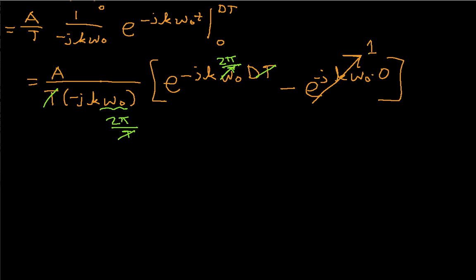And we also have a negative sign down here. So let's use this to write this as A over j k 2 pi times 1 minus e to the minus j k 2 pi D.